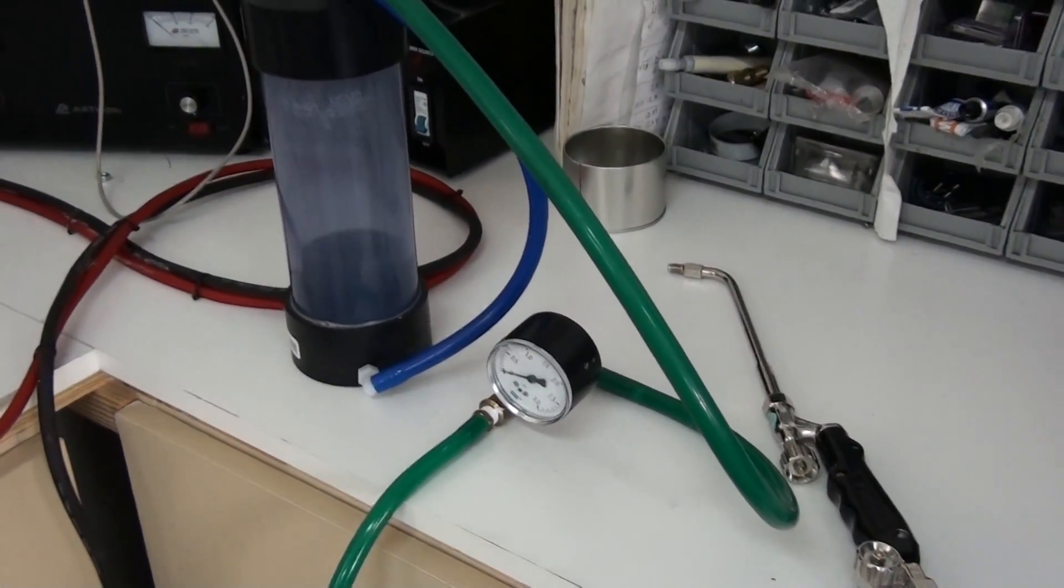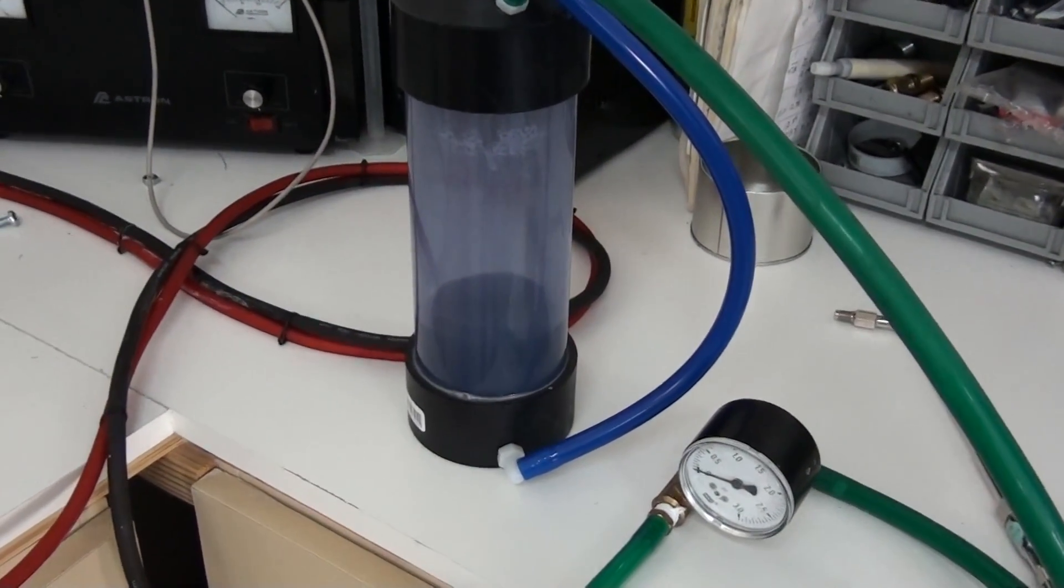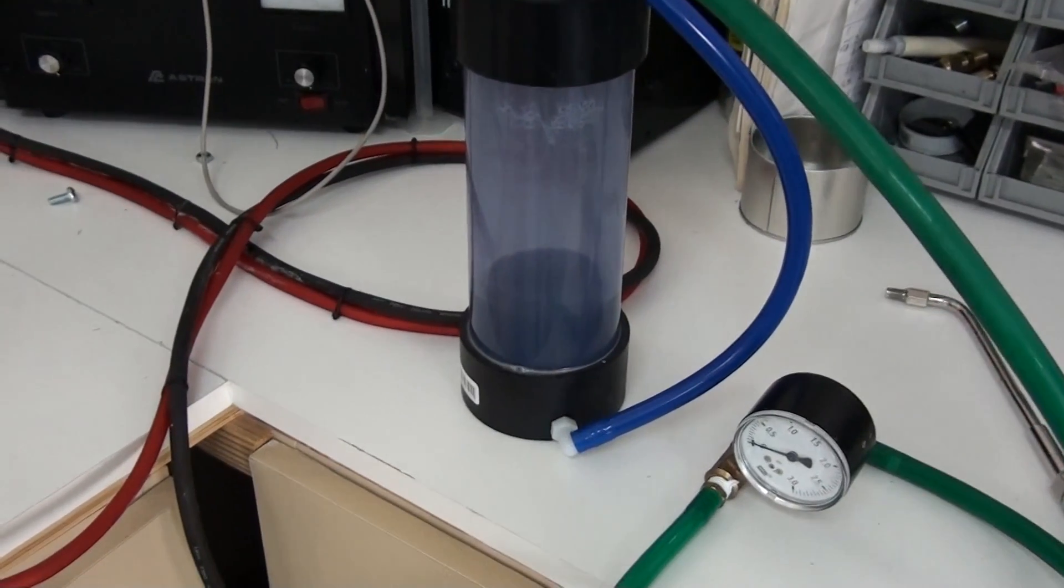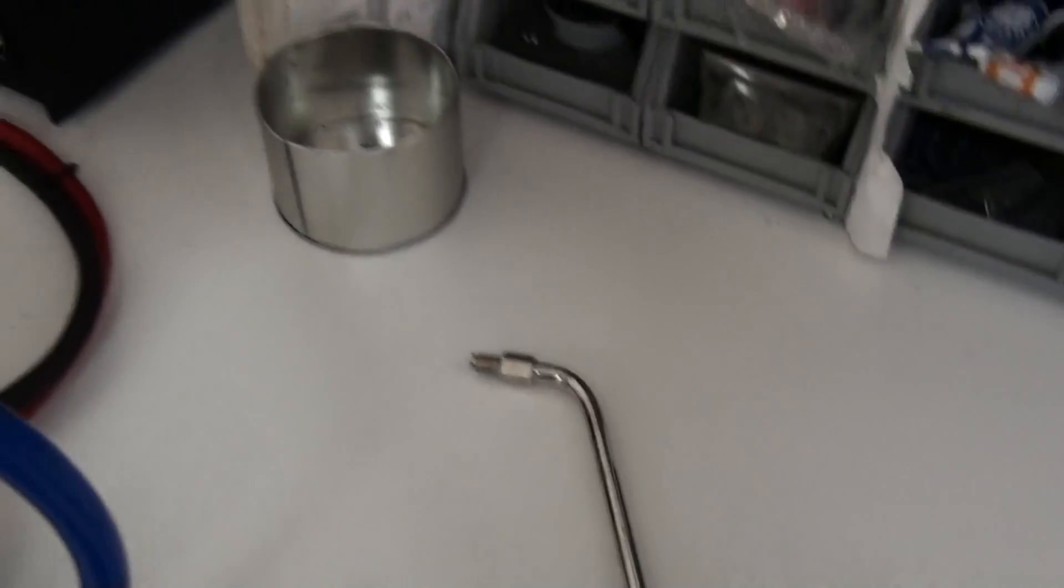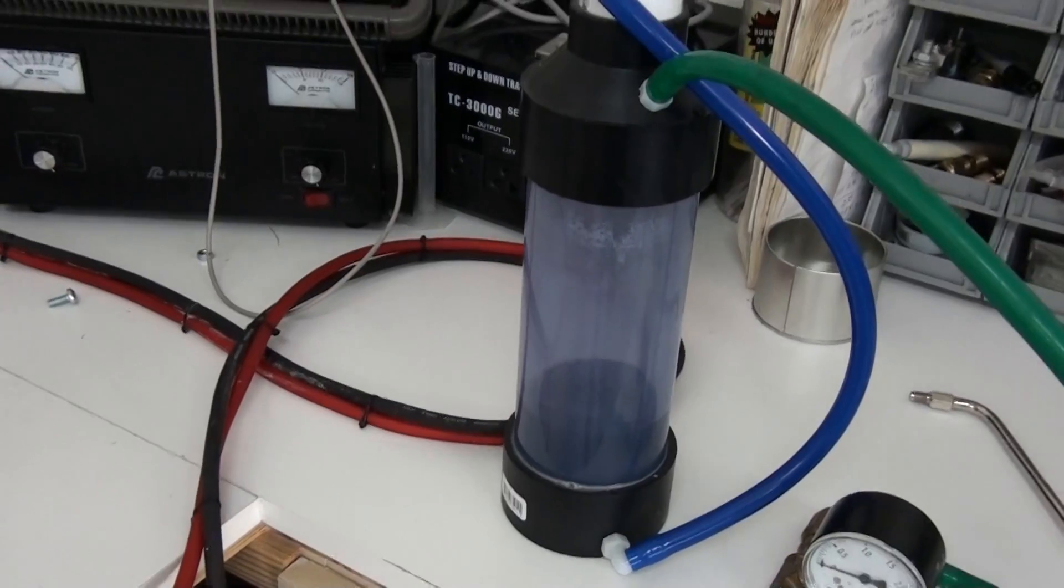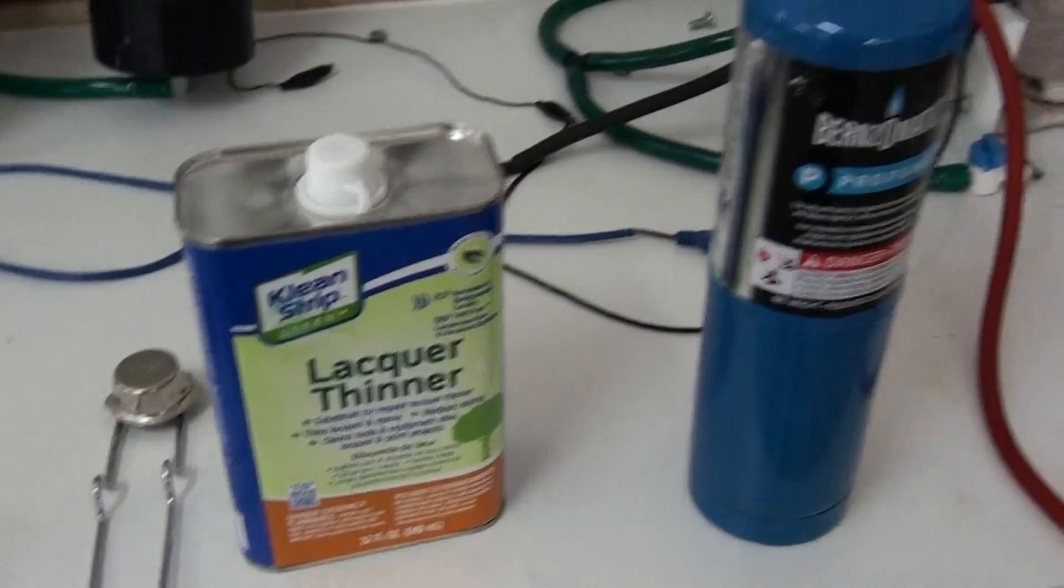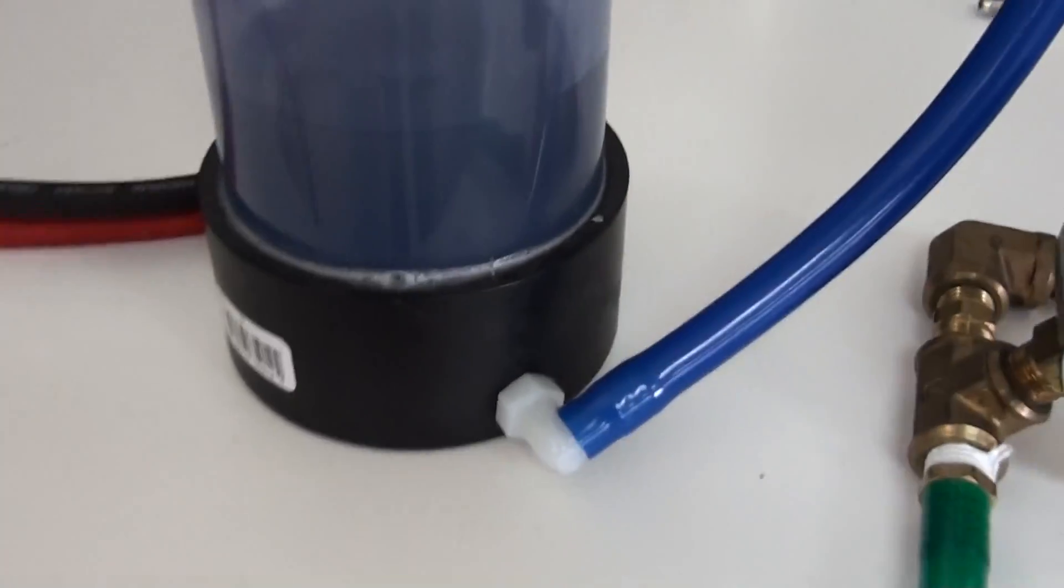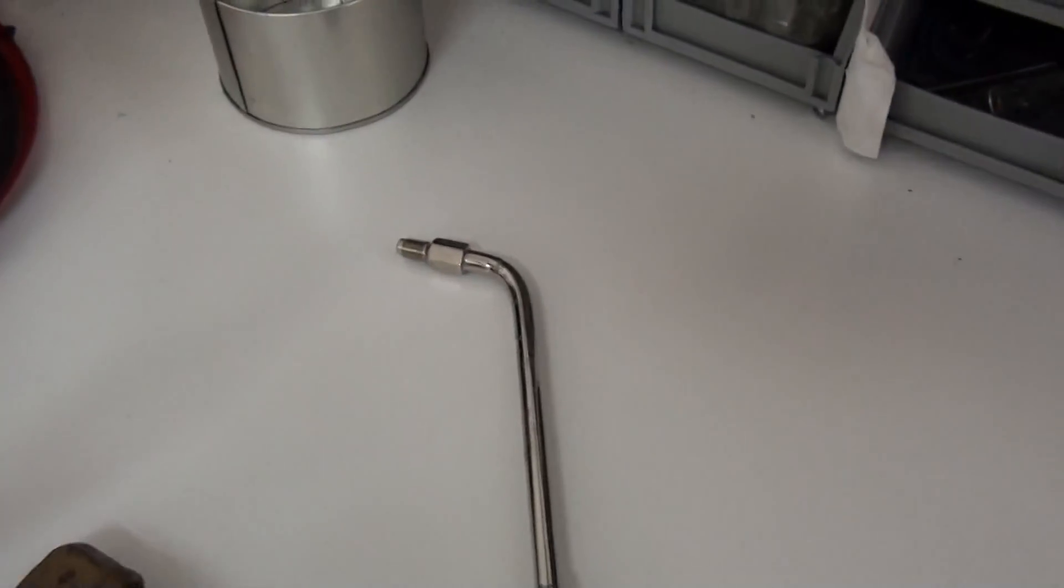He wanted me to bubble HHO through some different kind of lacquer thinners and that type of thing, and to see if we could keep the torch flame from flashing back. I wanted to show you what happens with lacquer thinner. So I went and poured some lacquer thinner in this bubbler here and I'm going to bubble the HHO through it and then out to my torch and show you what I got.